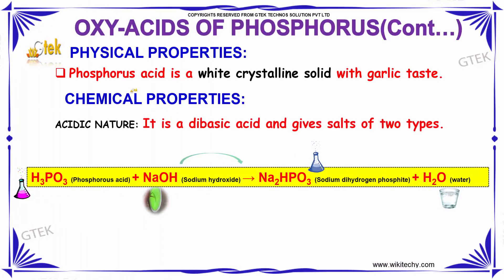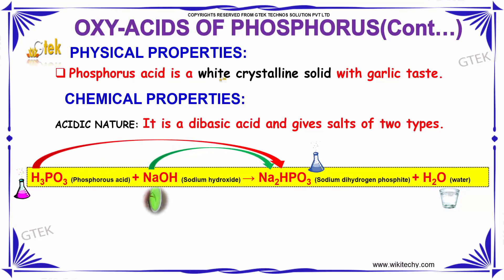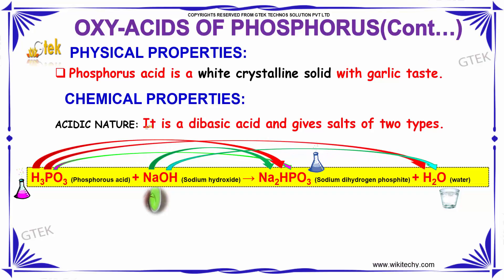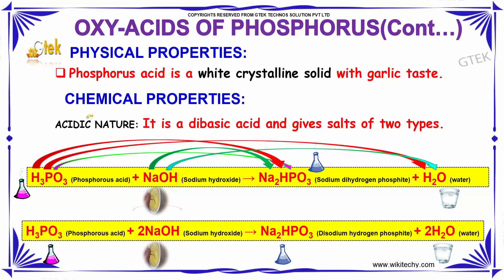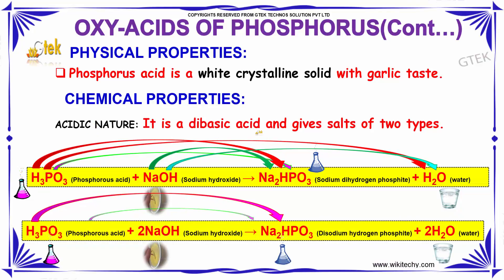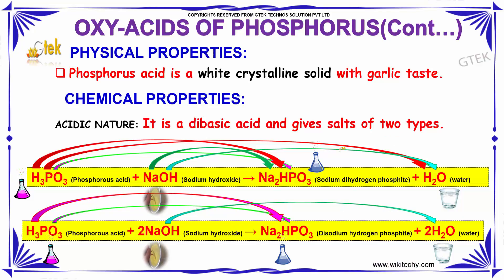Regarding the physical properties of Phosphorous Acid, it is a white crystalline solid with a garlic taste. For chemical properties, it is a dibasic acid and gives salts of two types.